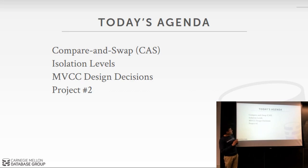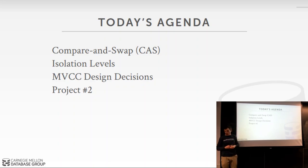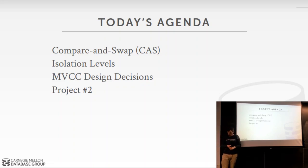For today's class, I'm going to start off talking about compare and swap and how you actually implement it, because that's going to be the core primitive we'll use throughout in-memory databases, especially in-memory concurrency control. Then we'll talk about isolation levels, cover the paper you guys read on MVCC design decisions, and finish off with the announcement of project two.